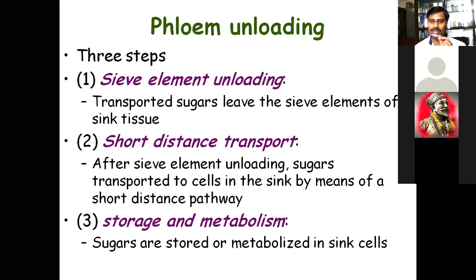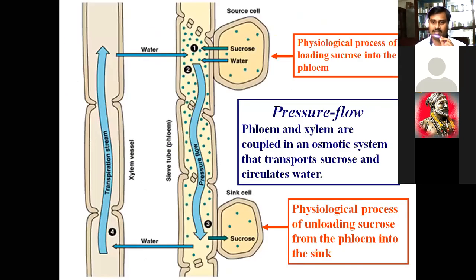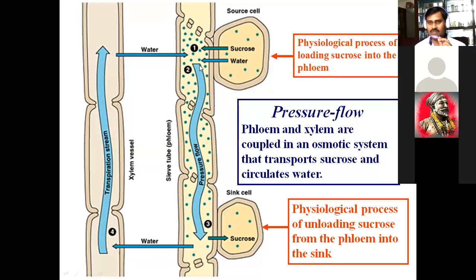In fruits, other forms of sugars are converted — such as fructose or glucose — and stored. One thing to note is that continuous flow of food material takes place by the mass flow, and mass flow or pressure flow theory is dependent on both phloem and xylem, which are coupled together and both involved in transport of substances.